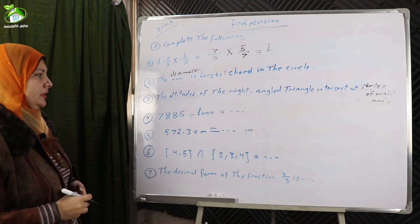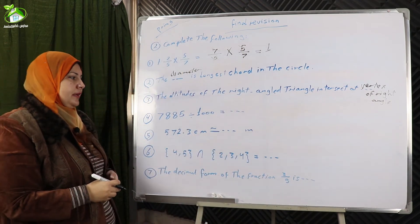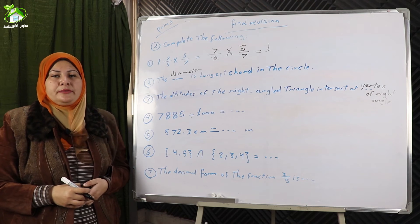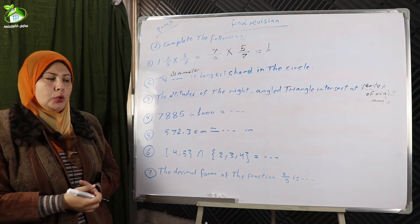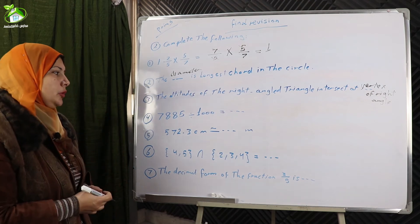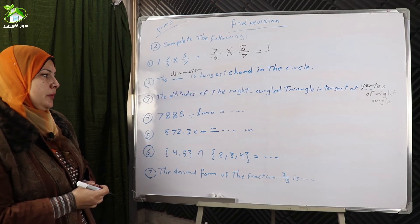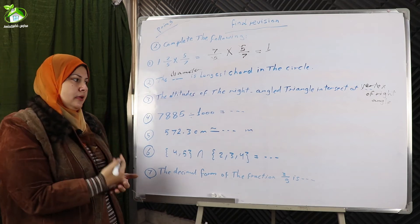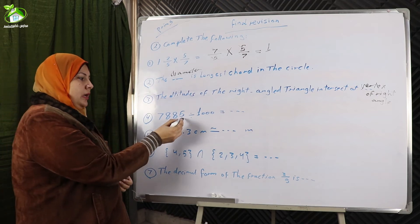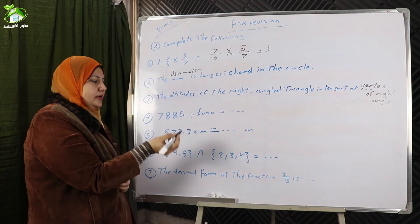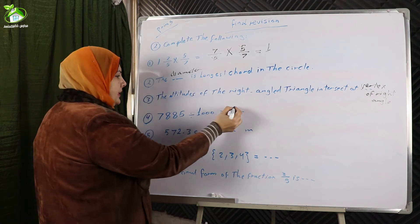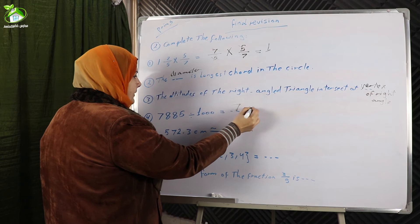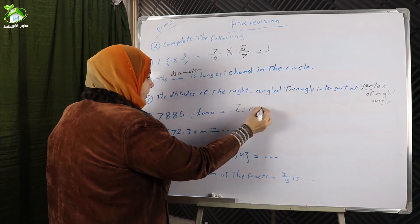Number four: 7885 divided by one thousand. For any whole number divided by one thousand, we place the decimal point after three digits from the right — one, two, three. The result will be 7.885.